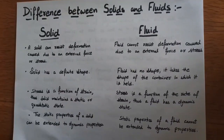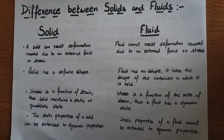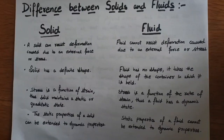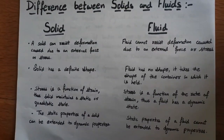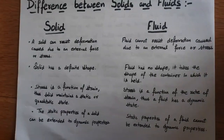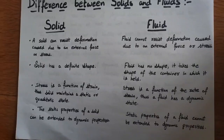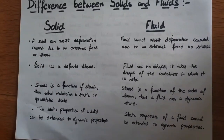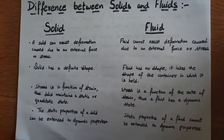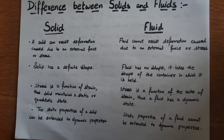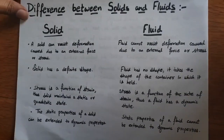In a solid, stress is a function of strain, and thus a solid maintains a static or quasi-static state. While in a fluid, stress is a function of the rate of strain, and thus a fluid has a dynamic state. As you increase the stress, it will deform the shape — the strain — so as the quantity of strain increases, it will deform more. Additionally, the static properties of a solid can be extended to dynamic properties, while in a fluid the static properties cannot be extended to dynamic properties.